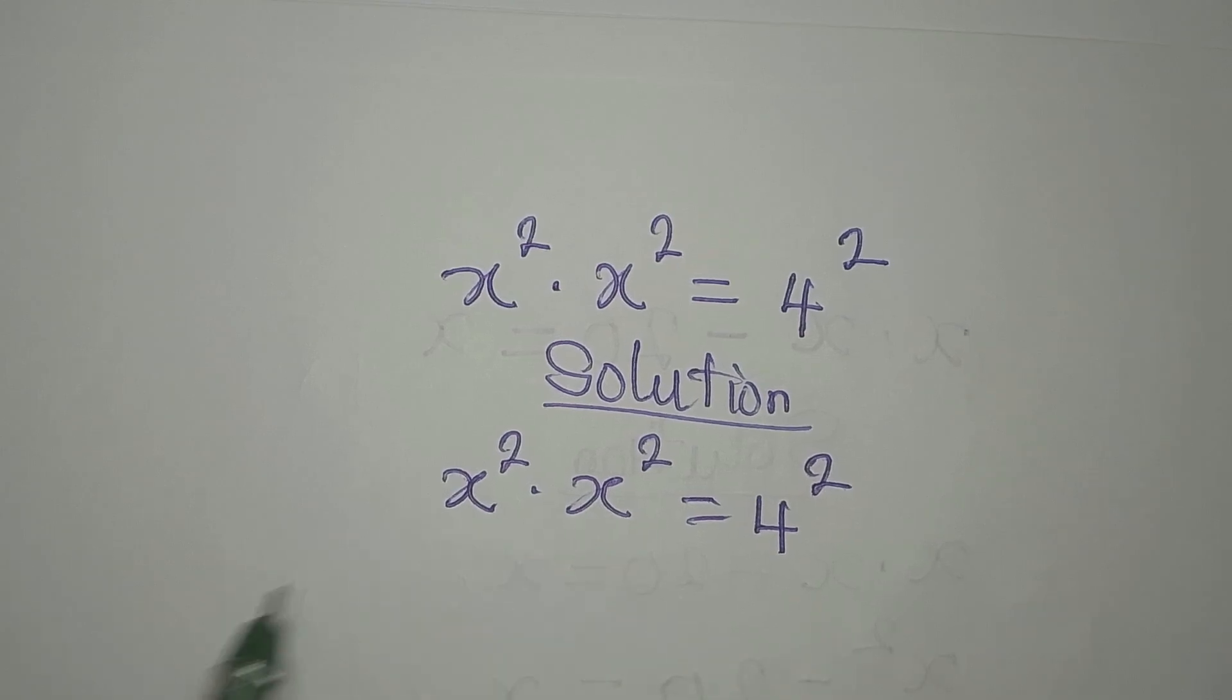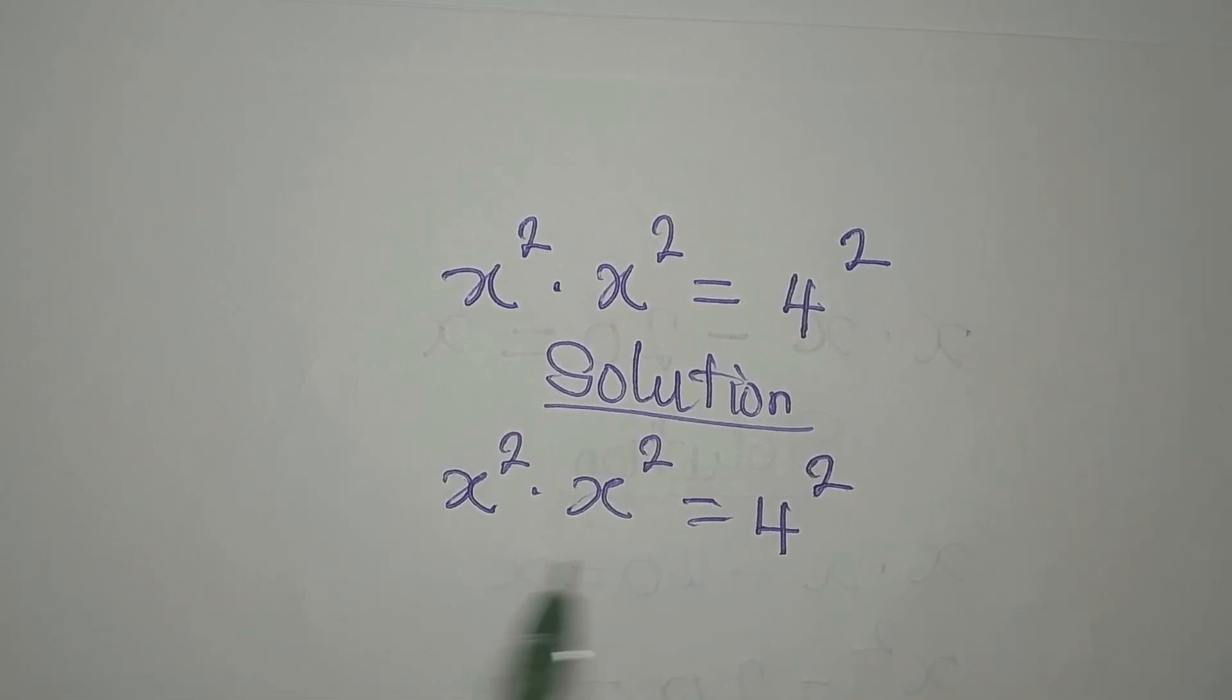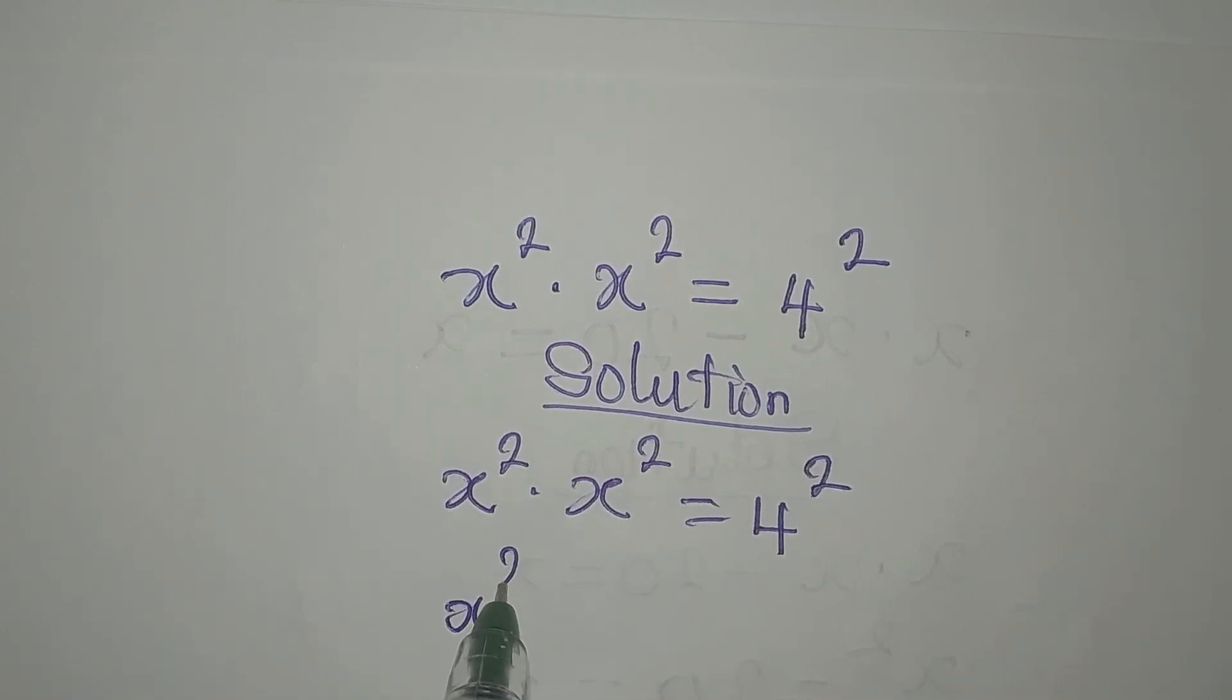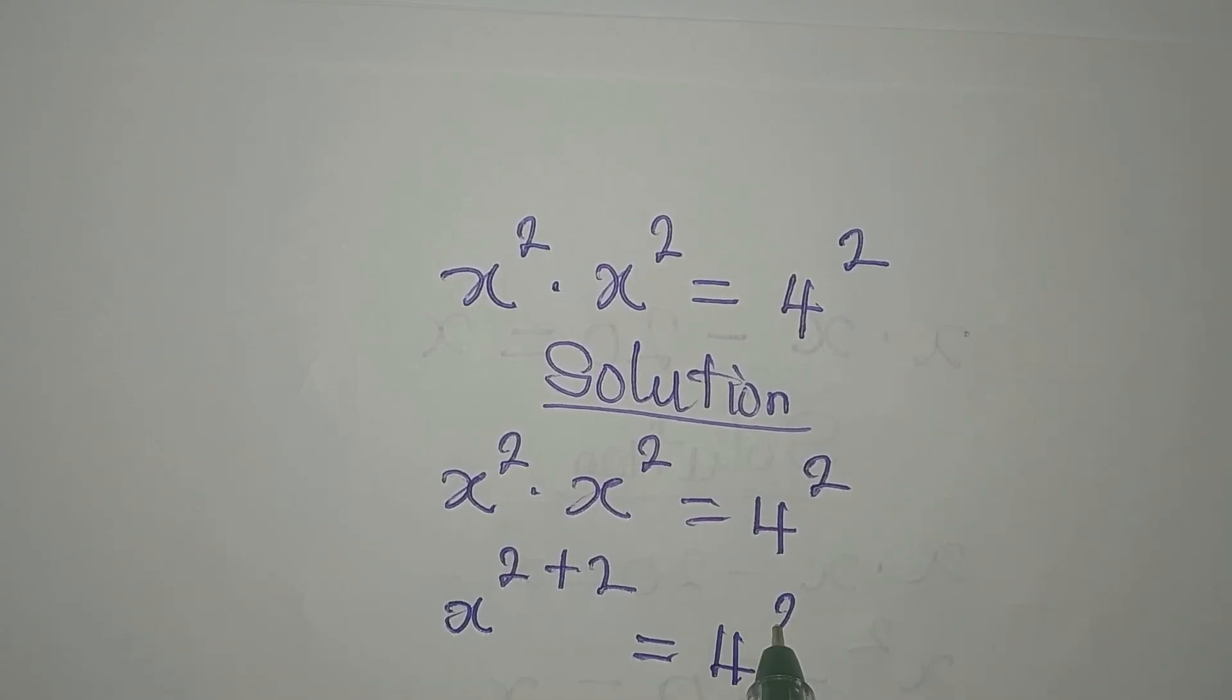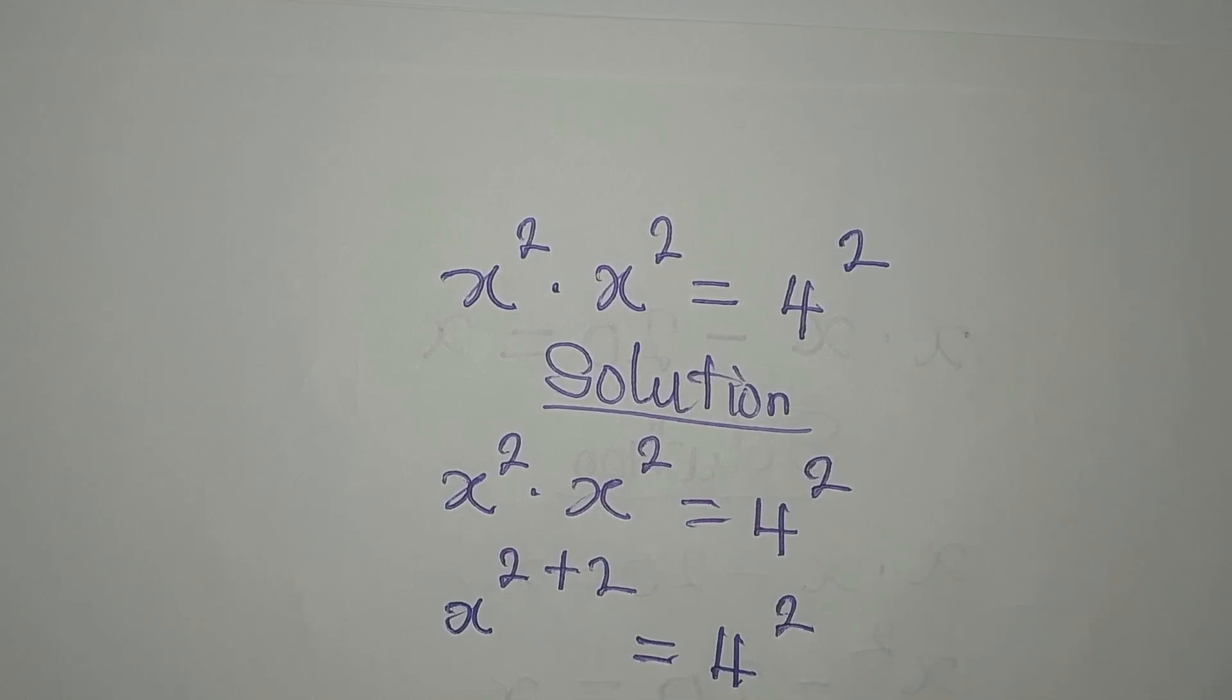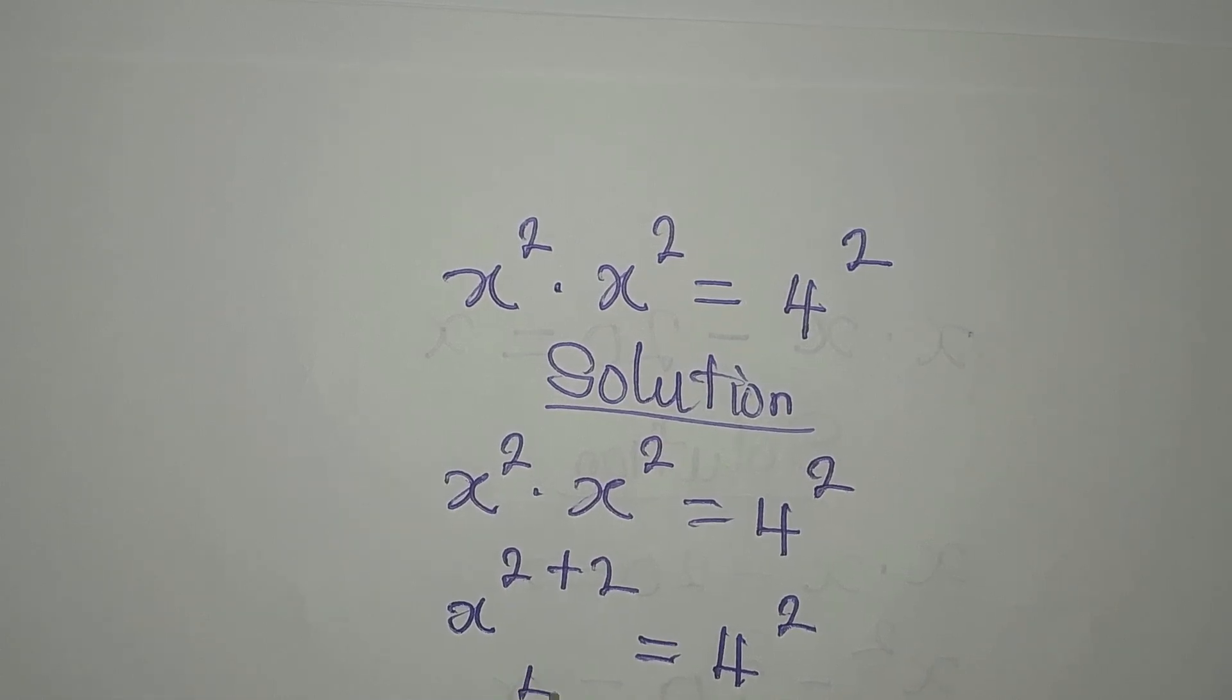The first thing we're going to do is multiply what we have on the left. If we do that, we are going to have x to the power of 2 plus 2. Pick one of the bases and add the power since you're multiplying, so we have 4 squared. From here we can say that this is the same thing as x to the power of 4 being equal to 4 to the power of 2.